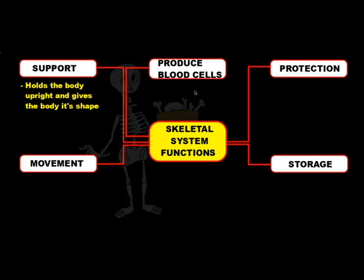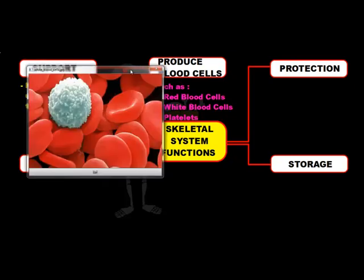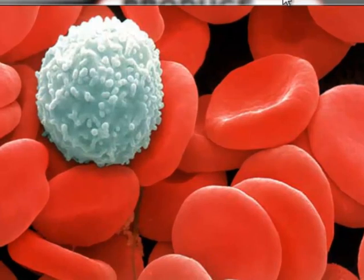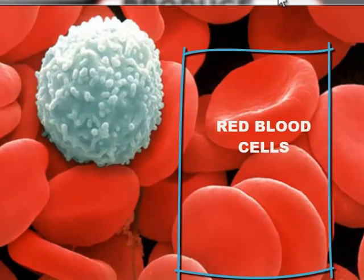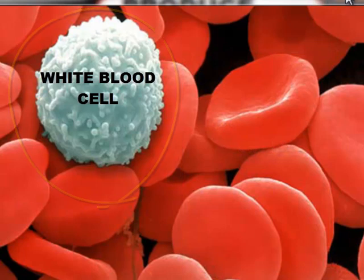The second function is the production of blood cells. Our bones produce three types of blood cells. We have red blood cells, which bring oxygen to the body and carbon dioxide away from the body. We have white blood cells, which fight off bacteria and other pathogens that get inside the body to keep us healthy. And lastly, we have platelets, which help your blood clot so that when you get a cut, the blood doesn't keep pouring out. Here we have a picture of the different types of cells produced by our bones — the red blood cells and the white blood cells. The platelets are actually missing from this diagram.